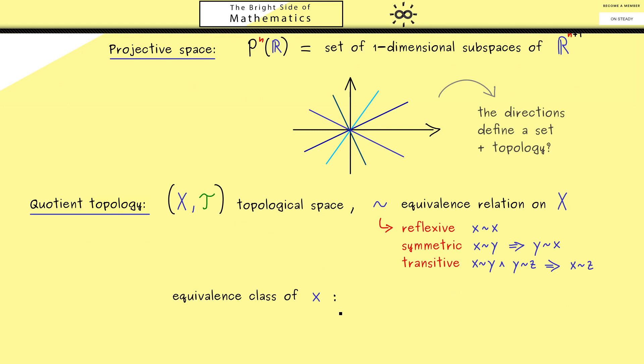Such an equivalence class of an element x is always a subset of the set capital X. And usually it's denoted by brackets where we put the equivalence class tilde in the index. Now you should imagine this as the box with label x where we put in all elements y that are equivalent to x. Hence, in the end we get a lot of boxes here that decompose the original set X.